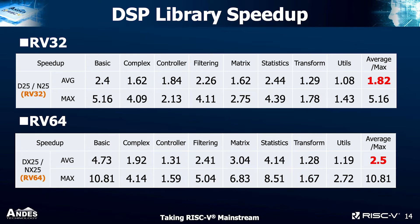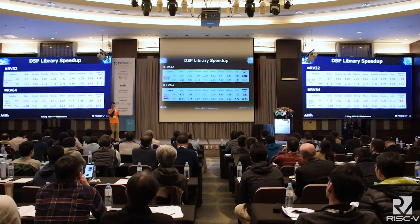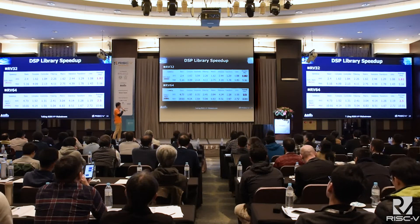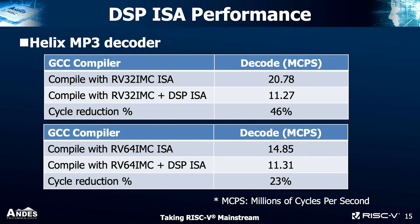This is a real benchmarking result. We benchmarked on a DSP library that includes more than 200 functions in eight different categories. On average for RV32, we get a 1.82 times speedup, and for RV64, we get an average of 2.5 times speedup. In the most important DSP category — filtering — we get about 2-point-something times performance advantage, with a maximum of 4 or 5 times performance advantage in both RV32 and RV64.